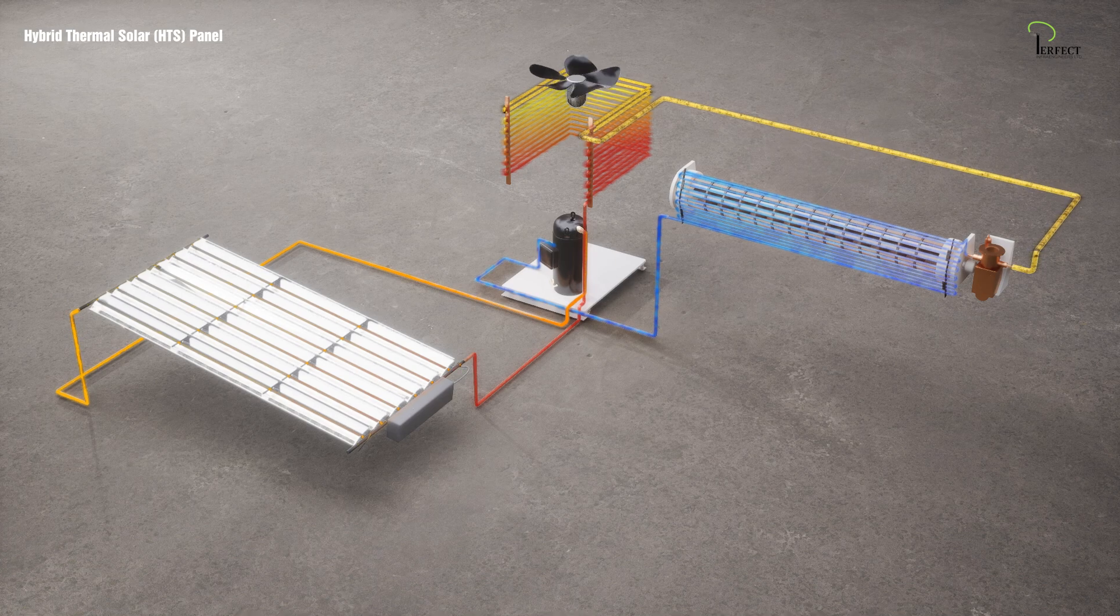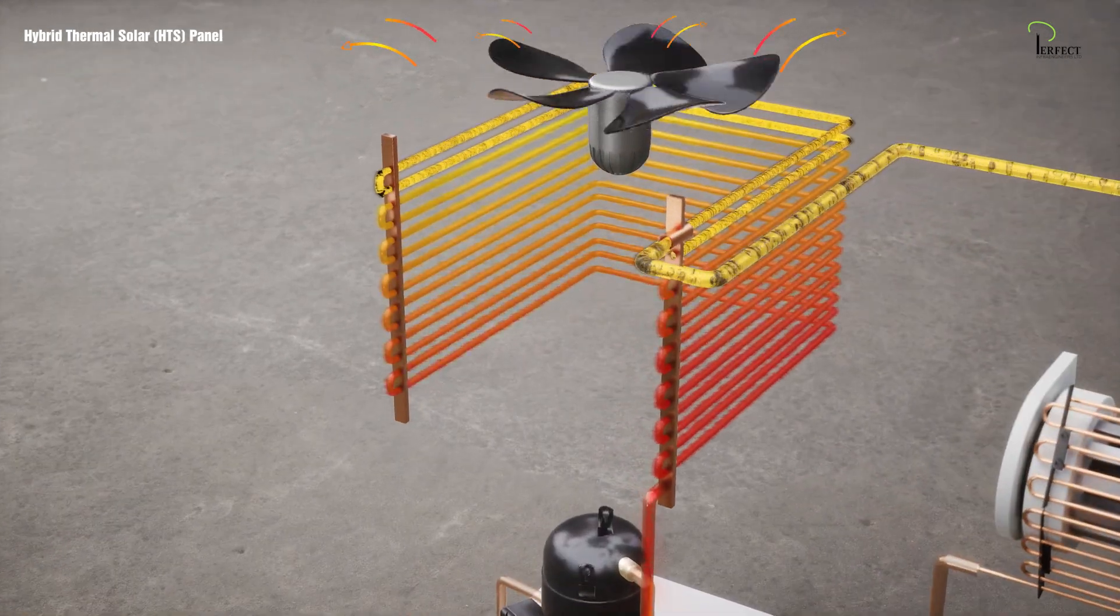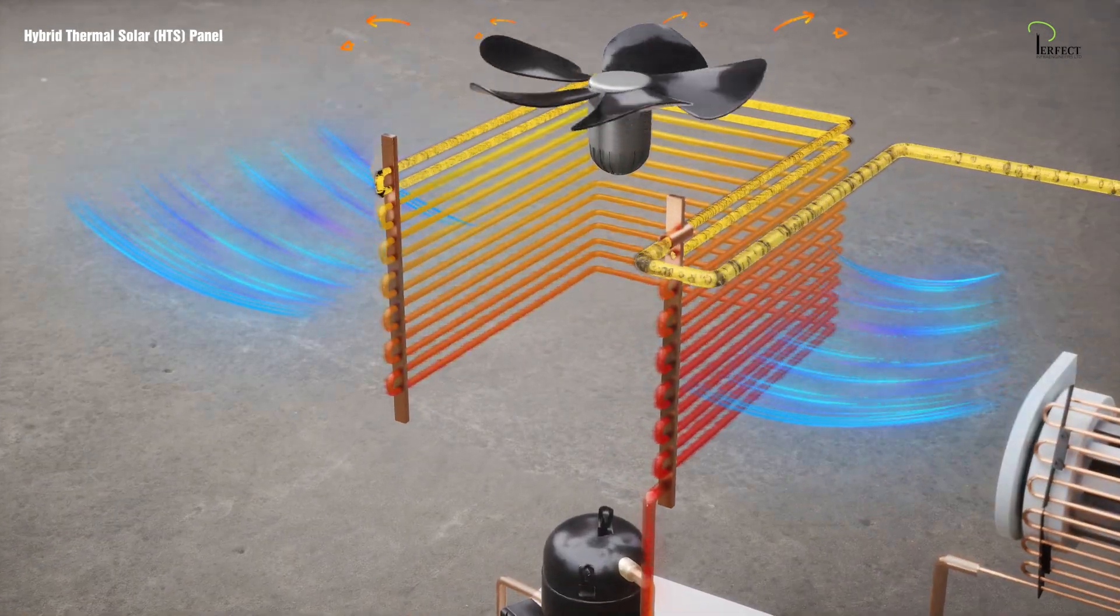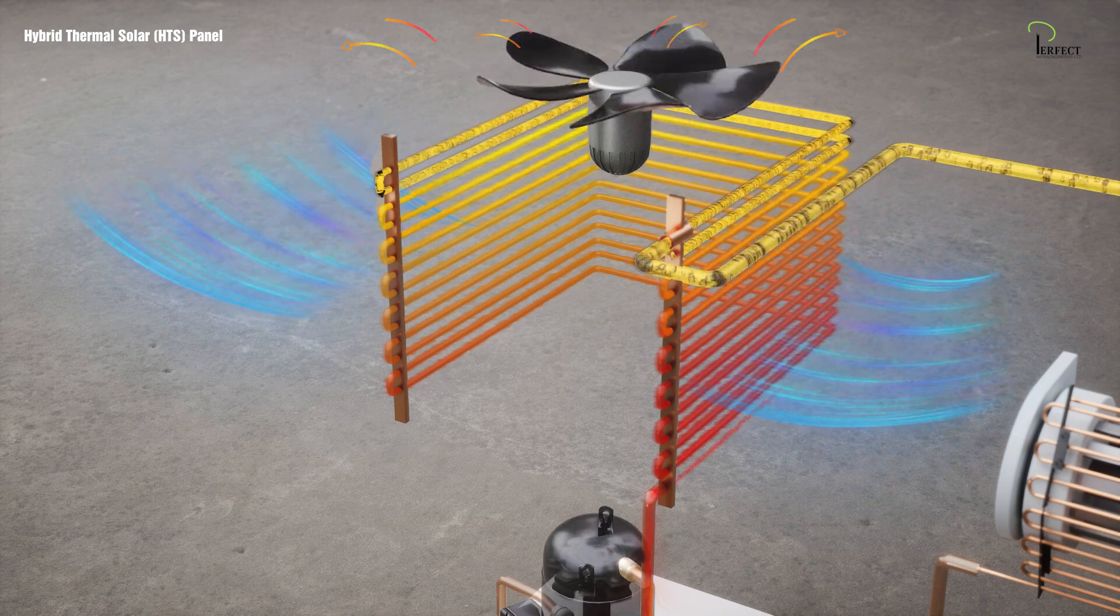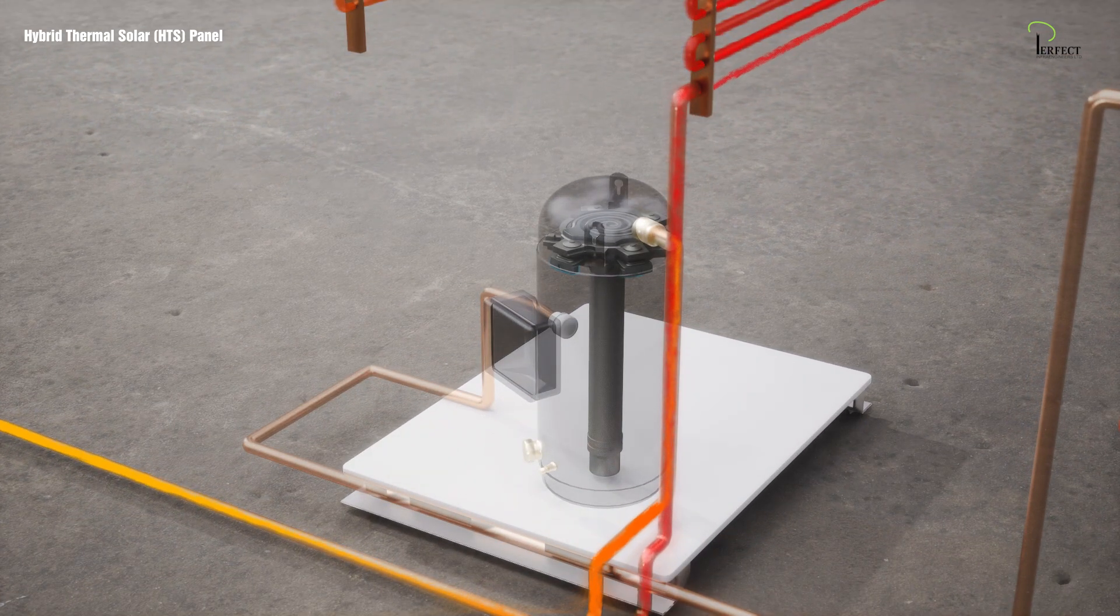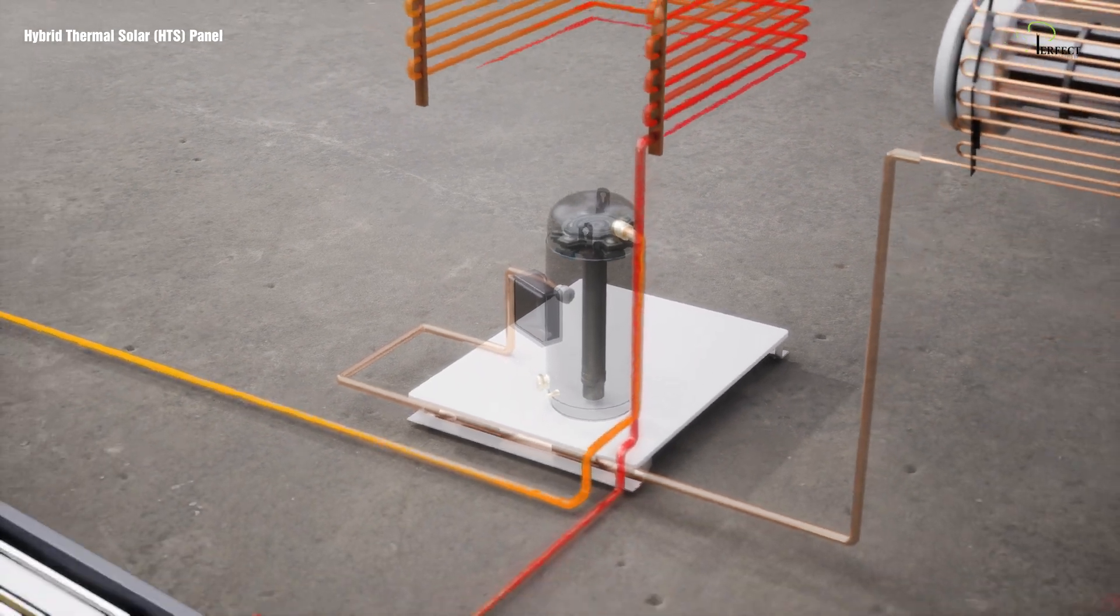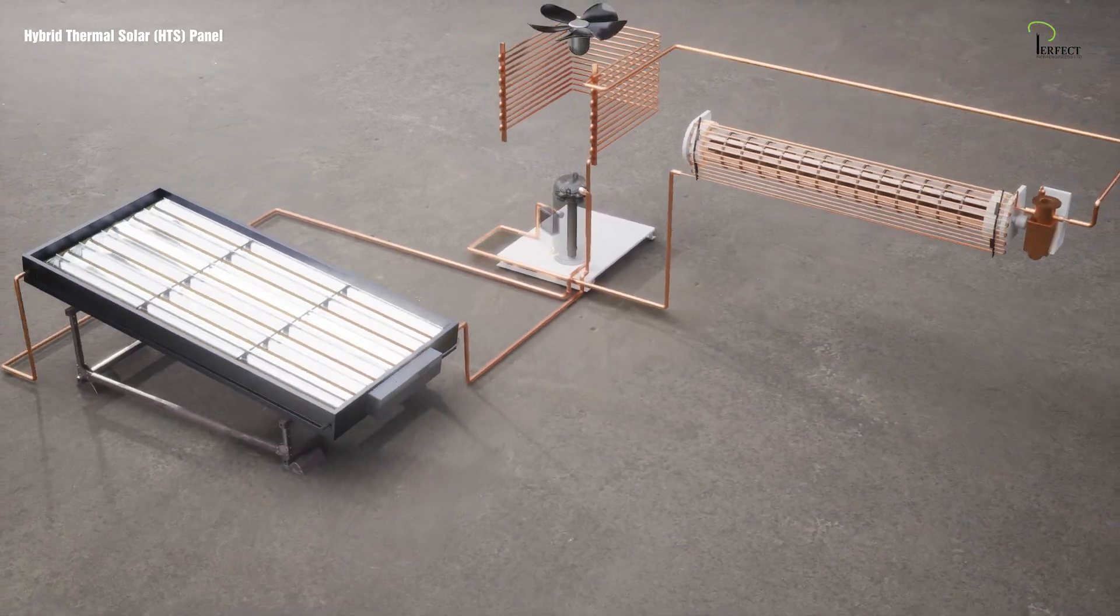This gas is now brought back to the AC unit's condenser where heat is released into the surrounding air. Because of this addition of pressure and temperature, the compressor has to do less work in the next cycle, thus reducing its energy consumption.